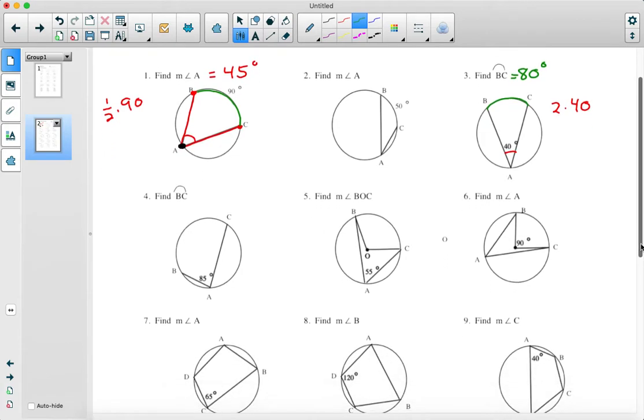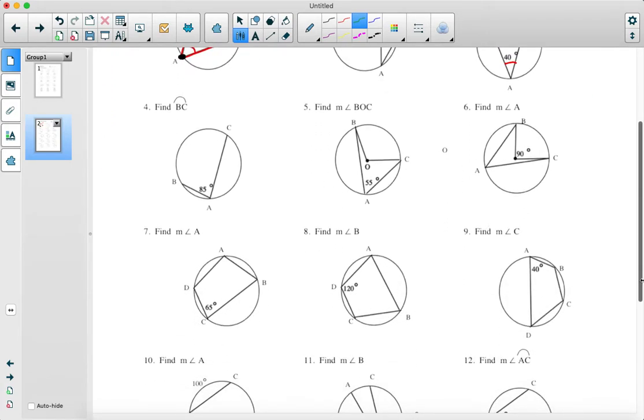Now the other types of angles we had with circles were the central angles. A central angle has the vertex at the center of the circle instead of on the circle, like the last several problems. For this, the measure of a central angle is the same or equal to the measure of the arc. If that arc is 30 degrees, the angle is 30 degrees. If the arc is 110 degrees, the angle is 110 degrees.